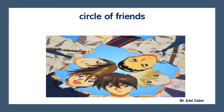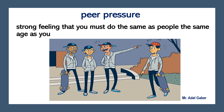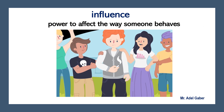'Circle of friends' means a group of friends. 'Peer pressure' — it is a strong feeling that you must do the same as people the same age as you. 'Influence' means the power to affect the way someone behaves.